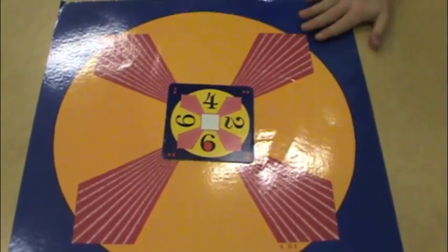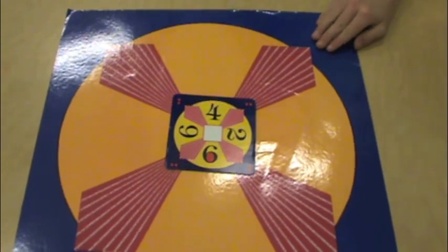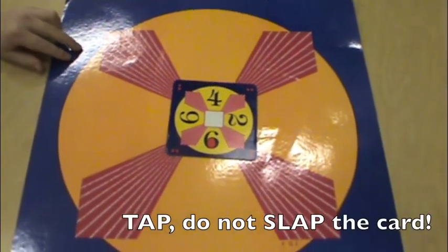And you have to keep your hands outside of the yellow ring. You may tap the card with one or two fingers and then you may state your final fact.